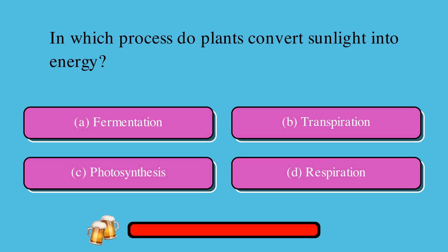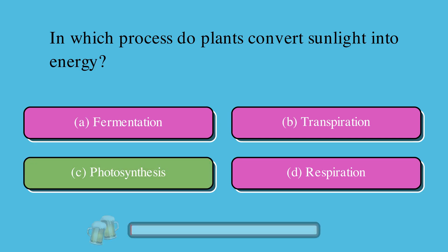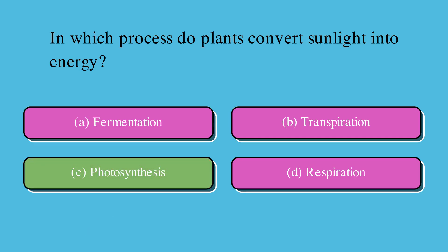In which process do plants convert sunlight into energy? A. Fermentation, B. Transpiration, C. Photosynthesis, or D. Respiration? The correct answer is C. Photosynthesis.